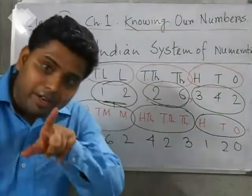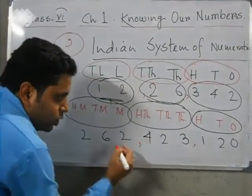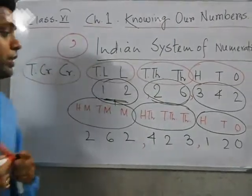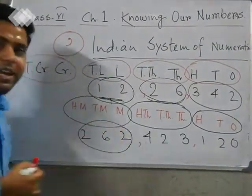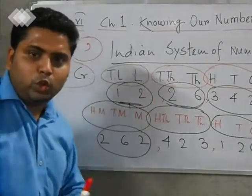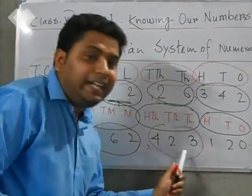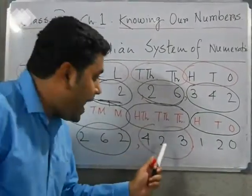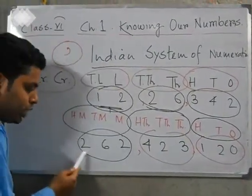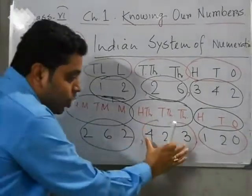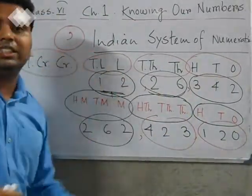How do we read this value? The million family gives us two hundred and sixty-two million. The thousand family gives us four hundred and twenty-three thousand. And the remaining is one hundred and twenty. So the full number is: two hundred and sixty-two million, four hundred and twenty-three thousand, one hundred and twenty. This is the international system of numeration.